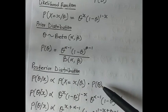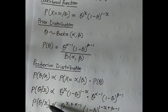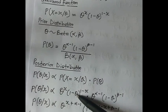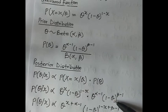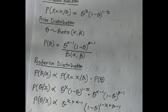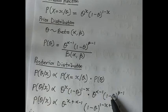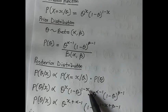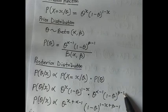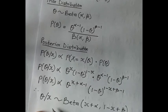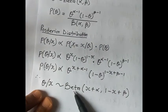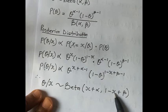The posterior is proportional to the likelihood function multiplied by the prior. Here we use the beta distribution for the prior. When you multiply the likelihood by the prior, combining the exponents, you get theta^(X + α - 1) times (1 - X + β - 1).